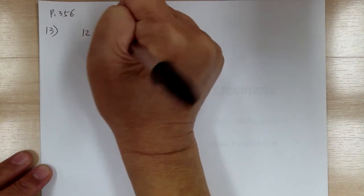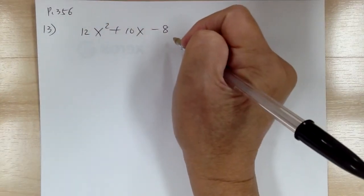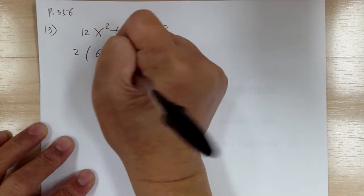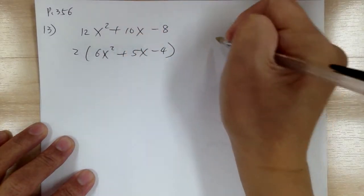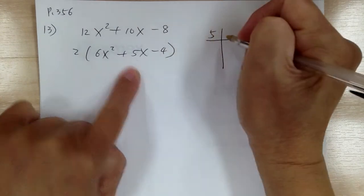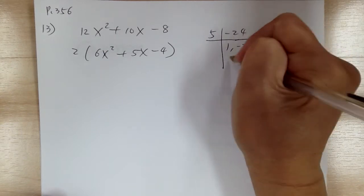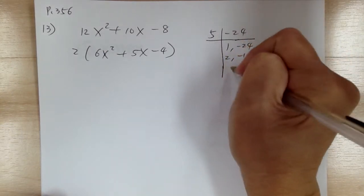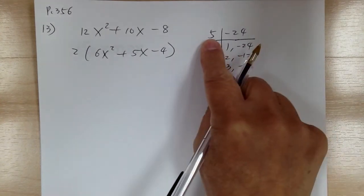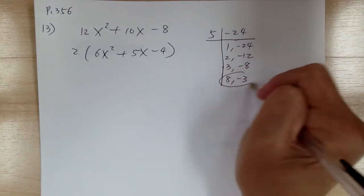Number 13. You have 12x squared plus 10x minus 8. Step 1, common factor — factor out 2. So you get 6x squared plus 5x minus 4. Then go to step 4, master product: 5 and negative 24. Start with 1, negative 24; 2, negative 12; 3, negative 8 — that gives negative 5. But you need a 5, so switch the numbers: 8, negative 3. That's the correct one.